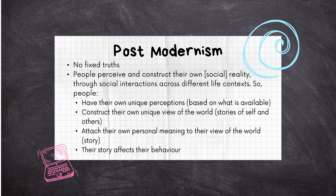Beyond social constructionism and constructivism, postmodernism entails that there are no fixed, stable truths — that people perceive and construct their own social reality through interaction with others at different life contexts. This means there is no one truth; instead there are multiple stories that can be told about a person or an event. Each person has their own unique perceptions based on whatever is available to them in their contexts and cultures, and people's behavior is not reducible to a set of generalized statements.